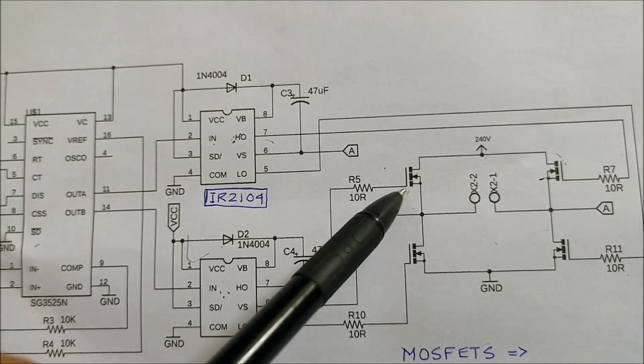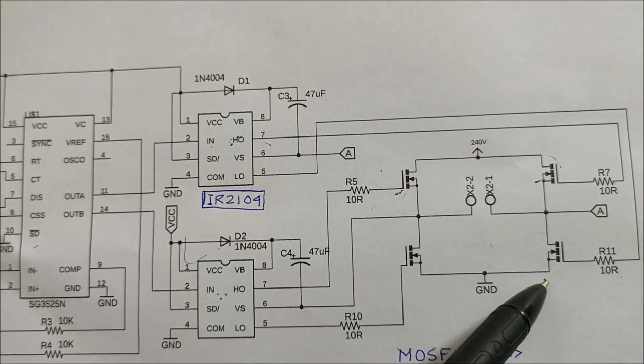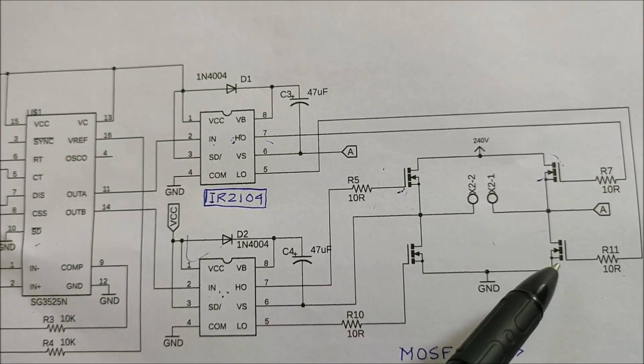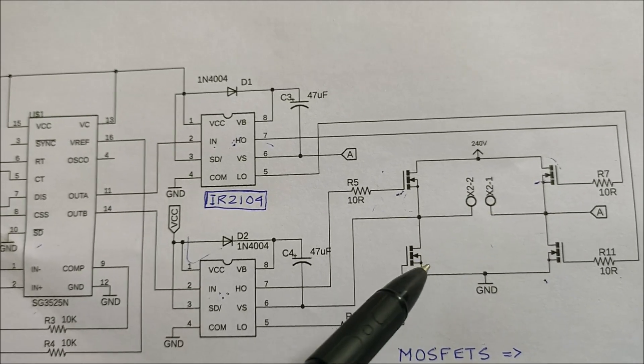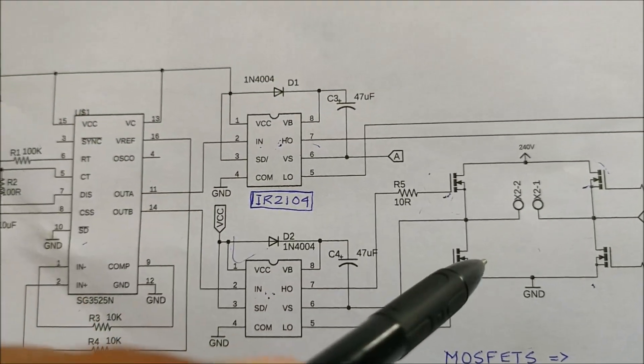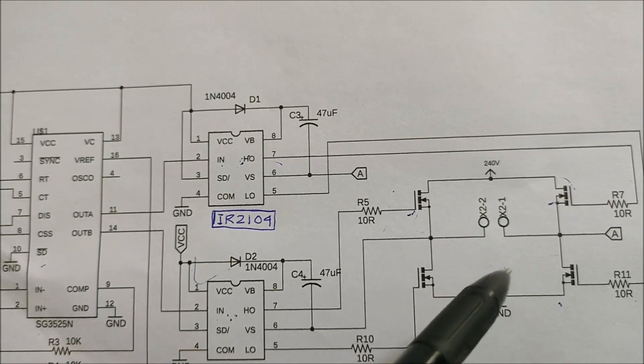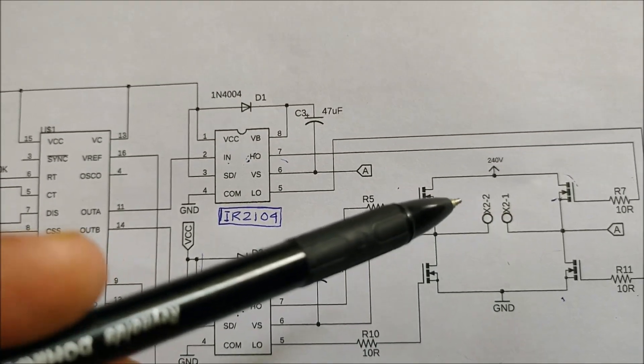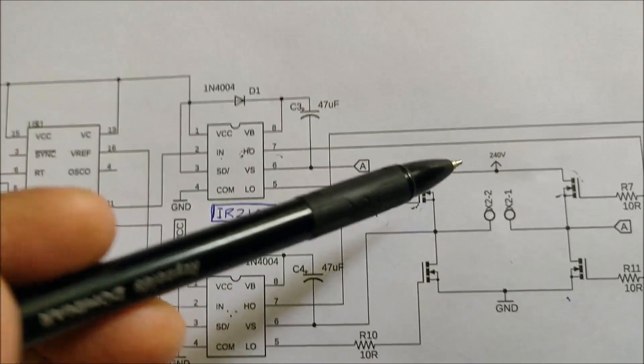In this case, this high side MOSFET and this low side MOSFET is active thus changing the direction of the current that was previously there. Now since the switching happens at 50 Hz, the output of the H-bridge is a 50 Hz signal of magnitude around 240 V.